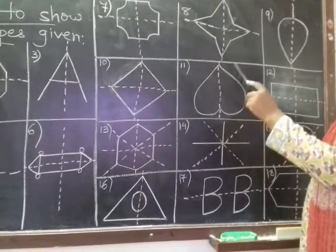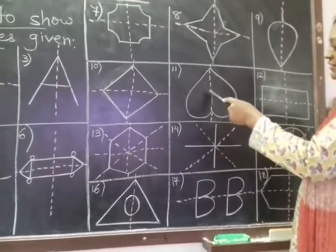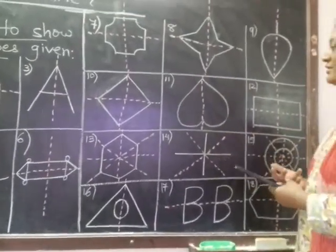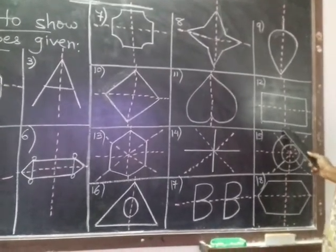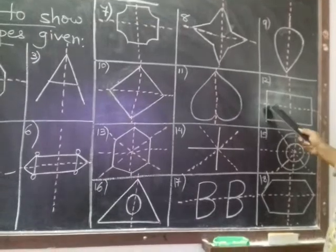Here this is a shape of leaf. Again, here also you can see it is divided in between to give two equal parts. Rectangle is shared into four parts. Four equal parts, vertically and horizontally.